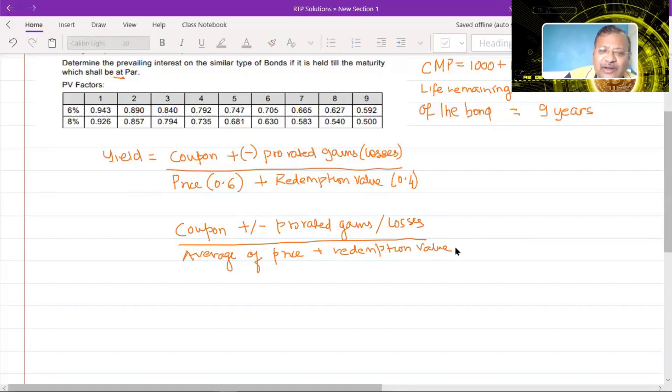Coupon plus or minus prorated gains or losses whole thing divided by average of price plus redemption value. Now this is what you would have been taught. See, when you are talking about average of price and redemption value, another way of writing this could be price plus redemption value whole thing divided by 2. Or there is another way: you can write price into 0.5 plus redemption value into 0.5, which means essentially you are giving a 0.5 weightage to the price and 0.5 weightage to the redemption value.